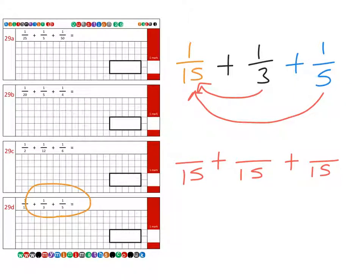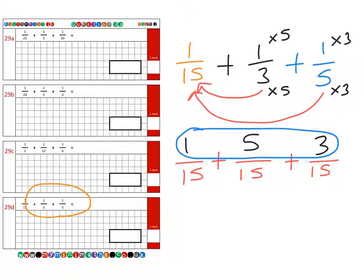Now, if we look, we've multiplied the 1 at the top. So 15 times 1 is obviously 15, so it's exactly the same for the top, so it stays the same. Then the 3 times 5 to make the 15, so the same with the top. So we have a new numerator of 5. And then finally, the 5 times 3. So we do the same with the numerator, and we get a new numerator of 3. So when we add all these up together, we get a final sum of 9 over 15.